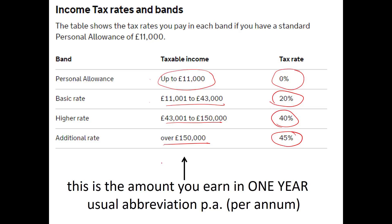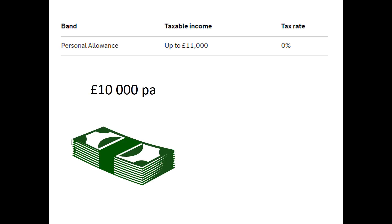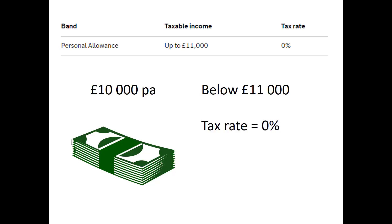Let's look at it bit by bit and start with someone on a low income — somebody below the personal allowance of £11,000 a year, say £10,000 per annum. It's clearly below £11,000, so according to the HMRC table their tax rate on all of this is 0%. And 0% of £10,000 is nothing. Absolutely right — on £10,000 per annum, you pay nothing in income tax.